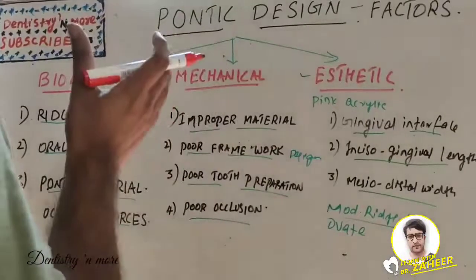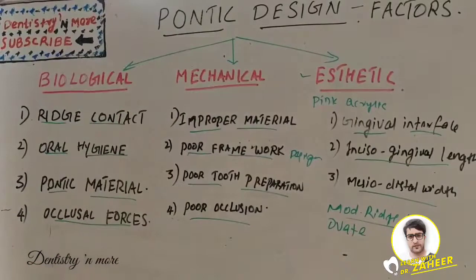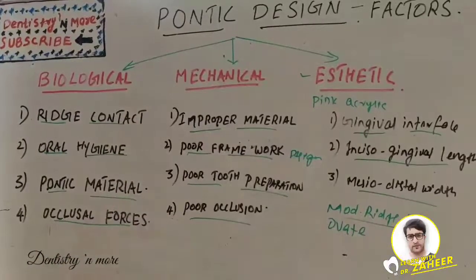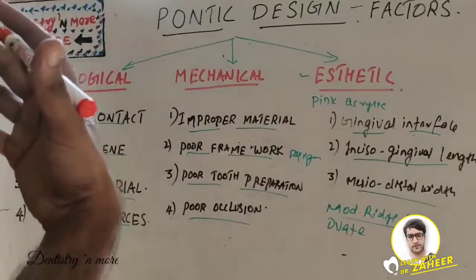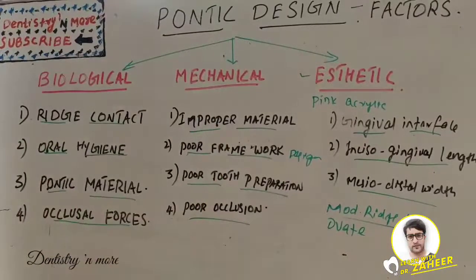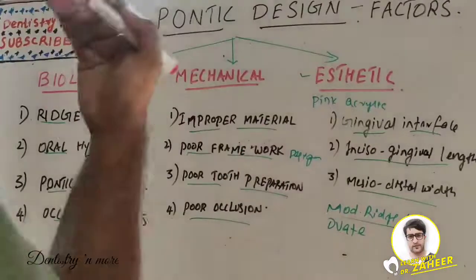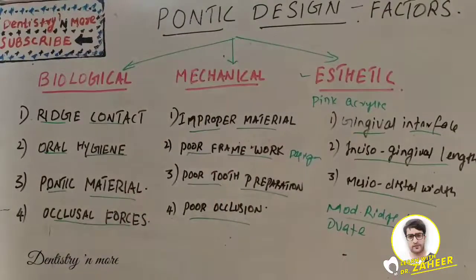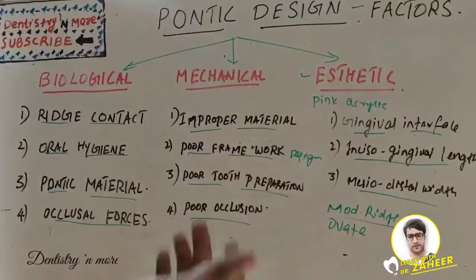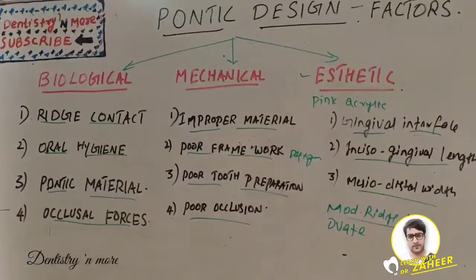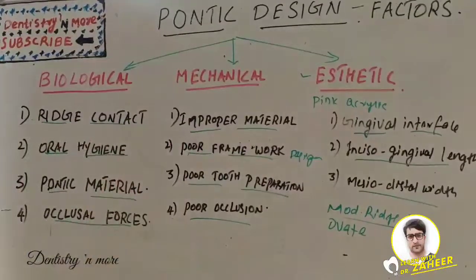Now we have mechanical considerations — these are the factors to think about while placing a pontic that can lead to fracture, loss of the prosthesis, or displacement of the retainer. They include choice of material, framework design, preparation, and occlusion. A poor choice of material or poor framework design leads to fracture. A preparation with inadequate clearance also leads to fracture, as does improper occlusion.